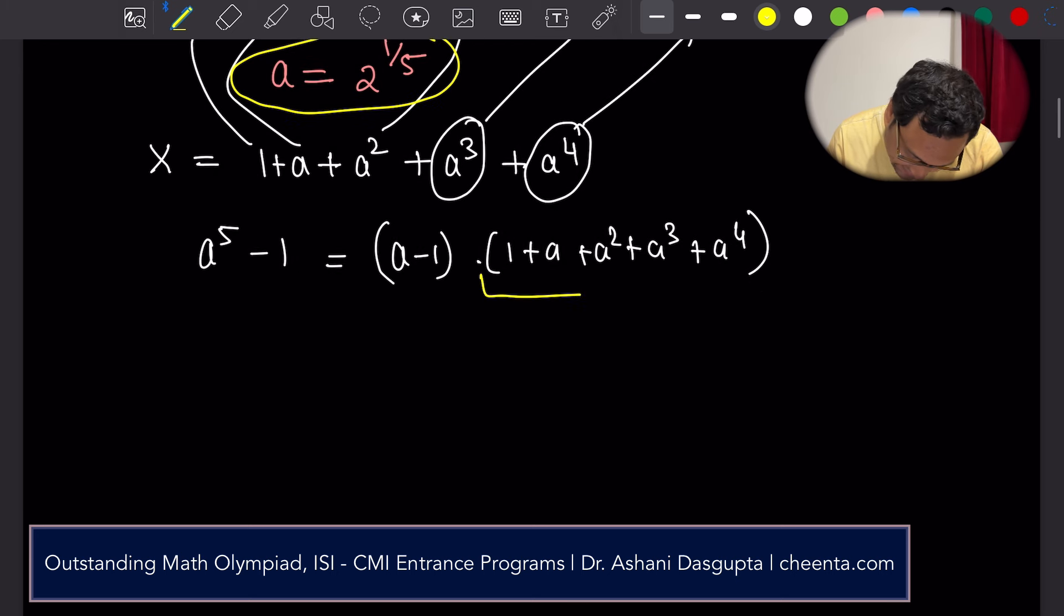this part is x. So a to the power 5 minus 1 by a minus 1 is x.